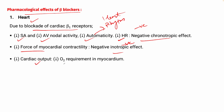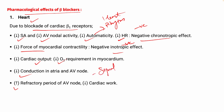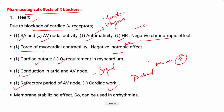There will be a decrease in cardiac output, a decrease in oxygen requirement of the myocardium, and a decrease in conduction in the SA and AV nodes. There will be an increase in the refractory period of the AV node. Cardiac work — that is preload and afterload — will decrease. Beta blockers also have a membrane stabilizing capacity, similar to local anesthetics, which blocks propagation of action potentials, making them useful in arrhythmias.